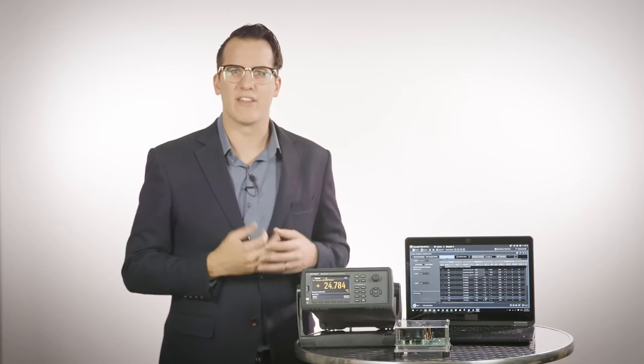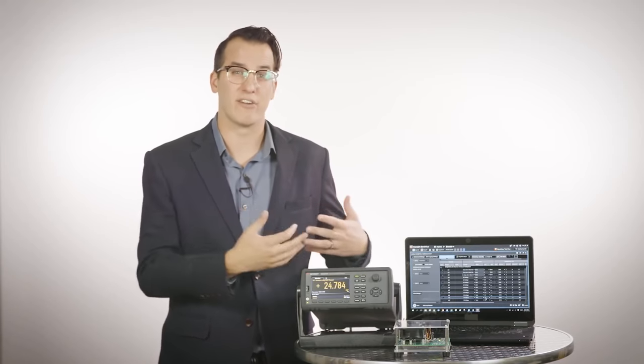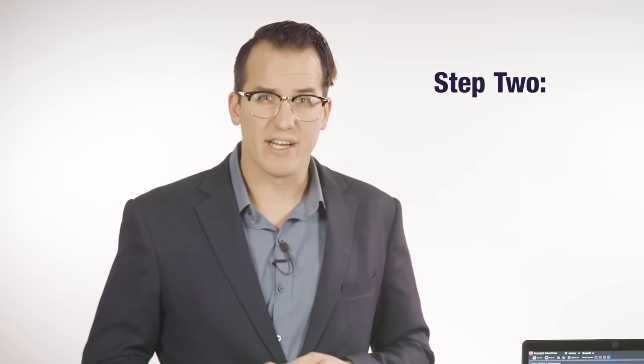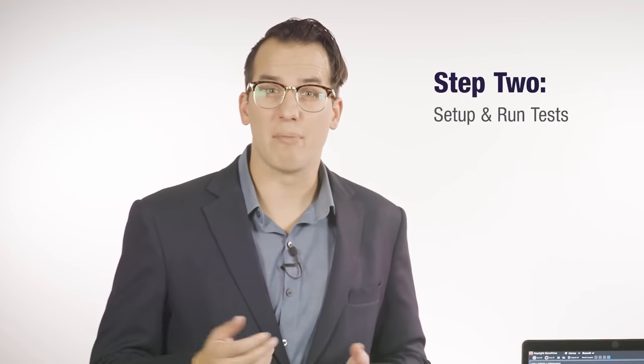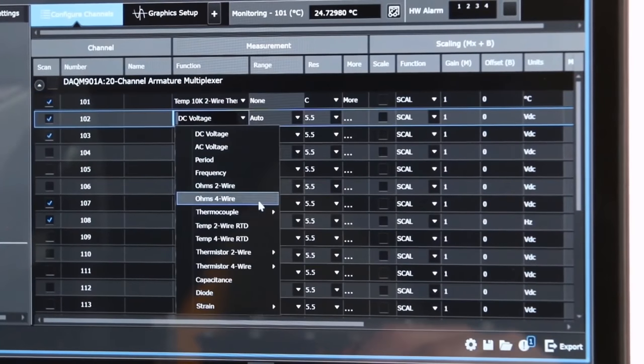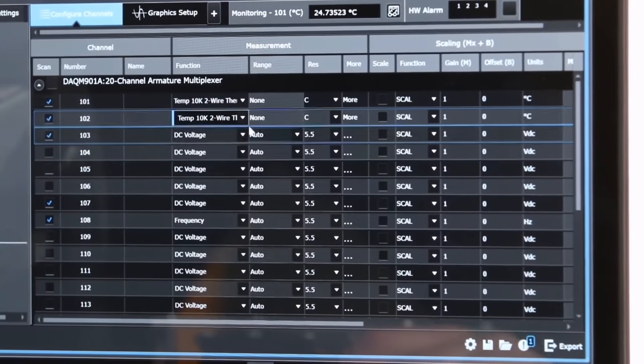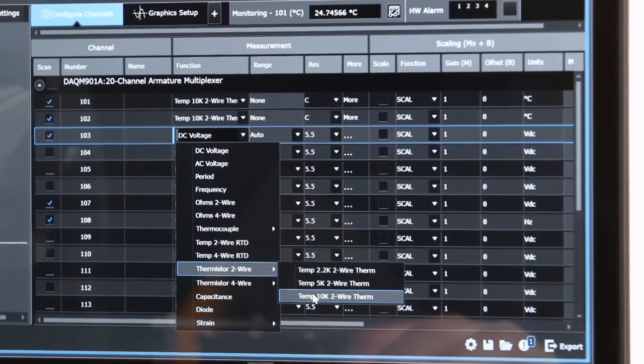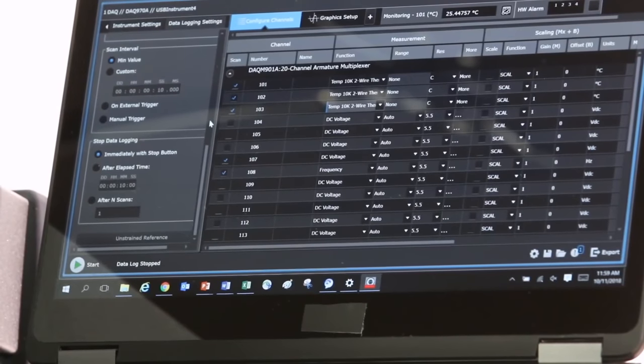With a modern DAQ you can set up, collect, and analyze data in a single piece of software. Now that it's connected, we'll go to step two, setting up our test. In BenchVue I'm going to set up the temperature channels in an easy spreadsheet format. We're using 10 kilohm thermistors, so I'm going to set each channel to the appropriate setting. Now that we're set up, we can run it.